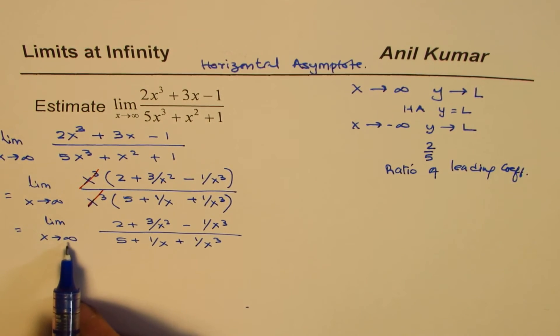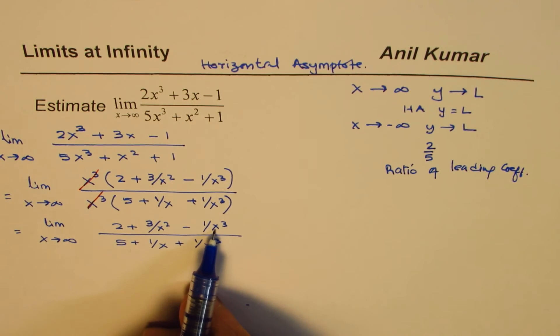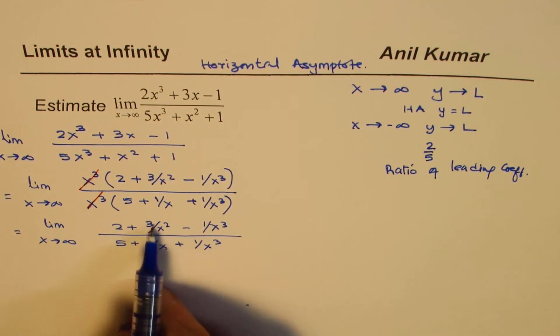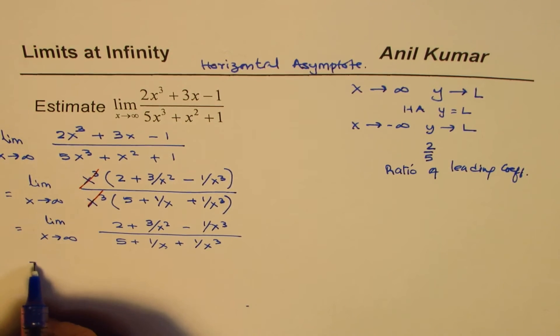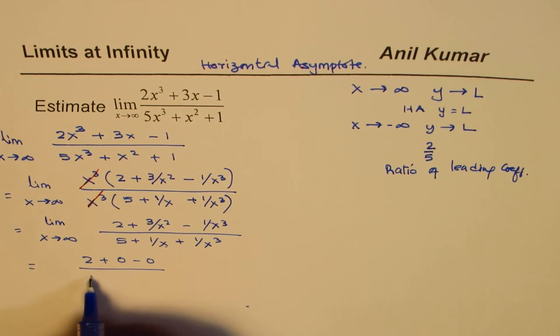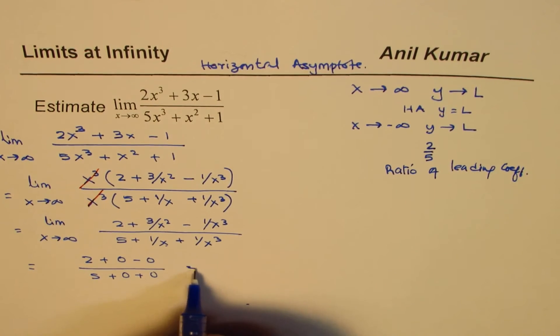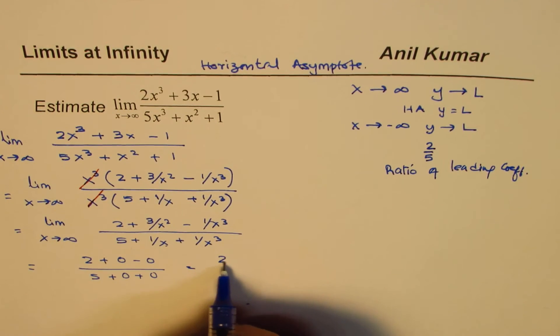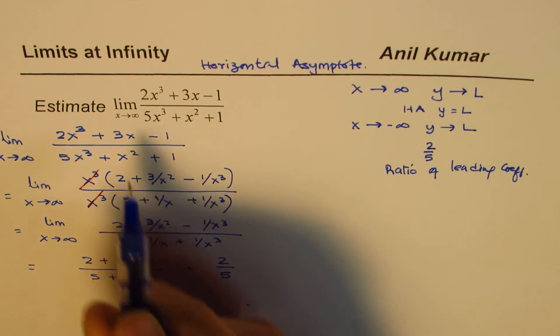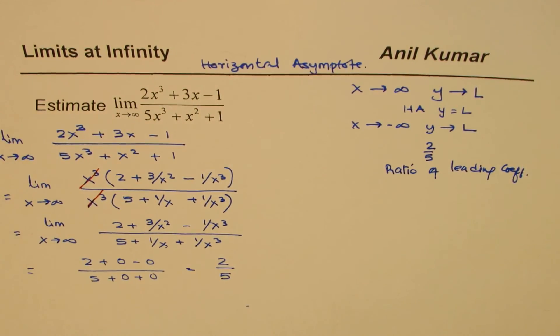Now when x approaches infinity, that means a very large number, then 3/x² will approach 0, this will also approach 0. So these four terms will approach 0. So we could write this as (2 + 0 - 0) divided by (5 + 0 + 0). That gives you 2/5. So always you will get the same answer if the degree of numerator and denominator is same.